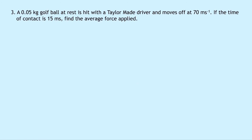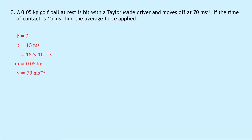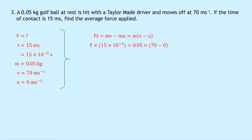Question 3 says that a 0.05 kilogram golf ball at rest is hit with a Tailor Made driver and moves off at 70 meters per second. The time of contact is 15 milliseconds — converting to seconds: 15 times 10 to the minus 3 seconds. Using FT equals M brackets V minus U, we substitute: F times 15 times 10 to the minus 3 equals 0.05 times (70 minus 0). Dividing both sides by 15 times 10 to the minus 3 gives F equals 233 newtons.